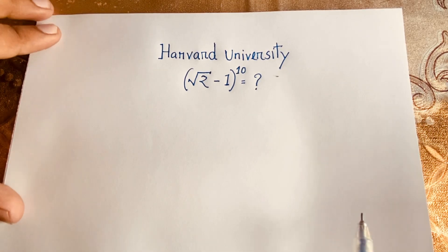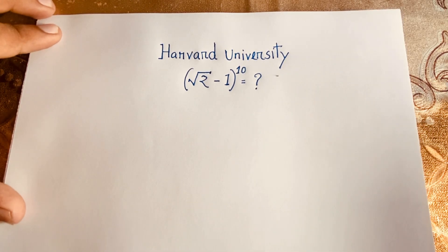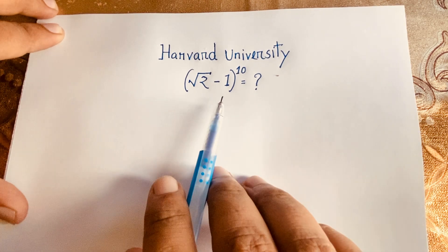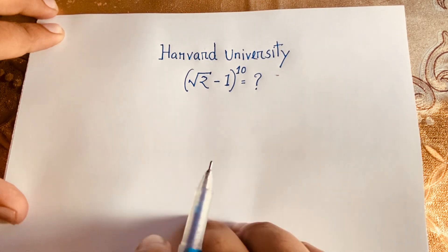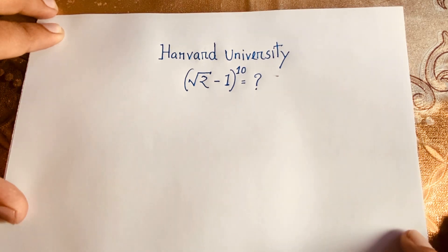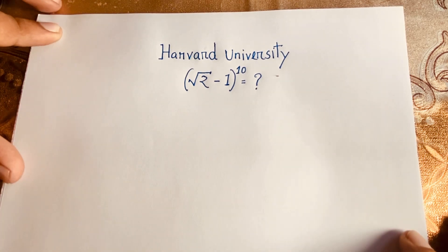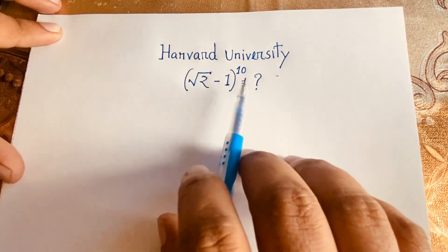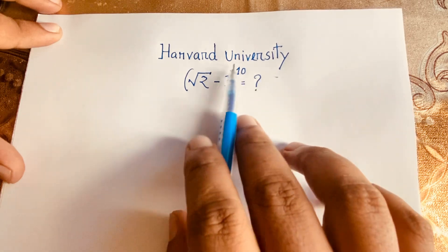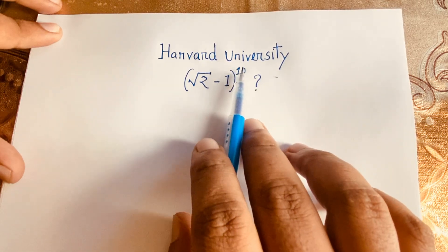Hello everyone. In this video, we have solved this radical math equation. The question is: square root of 2 minus 1, whole to the power 10, is equal to what? How to solve this radical math question? Here is (√2 - 1) to the power 10.